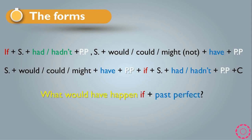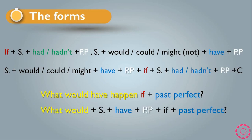We also have rules for using third conditional in question form. The first rule is: what would have happened, plus if, plus past perfect, plus question mark. The second rule for questions is: what would, plus subject, plus have, plus PP, plus if, plus past perfect, plus question mark. These are the rules for the question form of the third conditional.